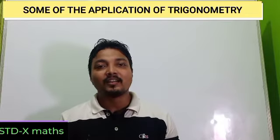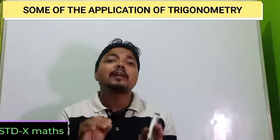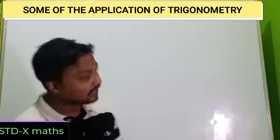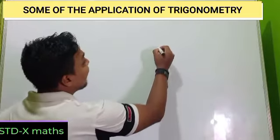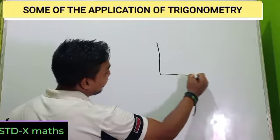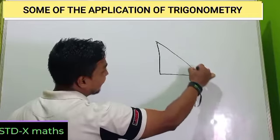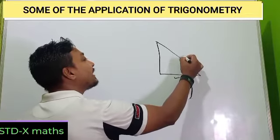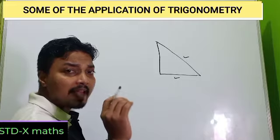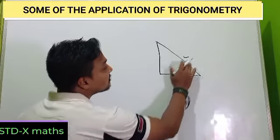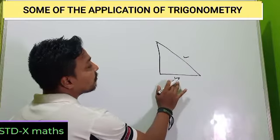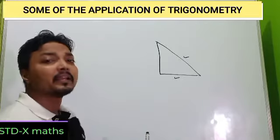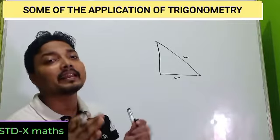Actually this chapter is the elder brother of our trigonometry chapter. In the trigonometry chapter, our discussion was: whenever in any right angle triangle, minimally two of its sides are given — it may be any two sides — how to find out any of the trigonometric ratios.